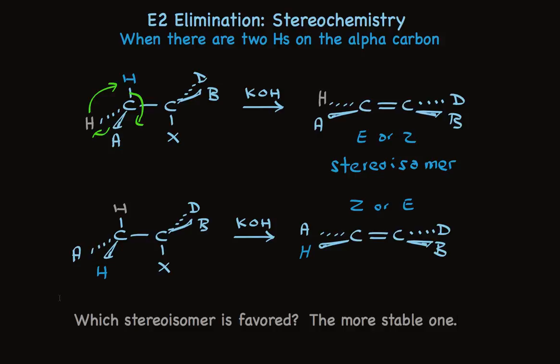So there are 1,2 elimination cases where the product has no stereochemistry. There are other cases where there are two stereogenic centers, and the reaction is stereospecific. And then there's this case where there's only one stereogenic center. There are two alpha hydrogens, and the reaction is stereoselective. Stereoselective means that there's more of one alkene formed compared to the other.